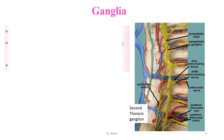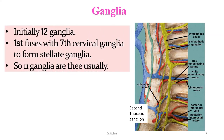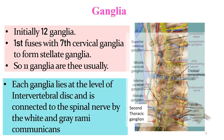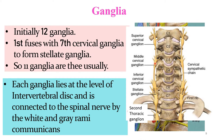Initially there are 12 ganglia in the thoracic region, but the first usually fuses with the 7th cervical ganglion to form the stellate ganglion, leaving 11 thoracic ganglia. Each ganglion lies at the level of the intervertebral disc of its corresponding segment. They are connected to their spinal nerve by rami communicantes — white and gray rami communicantes.